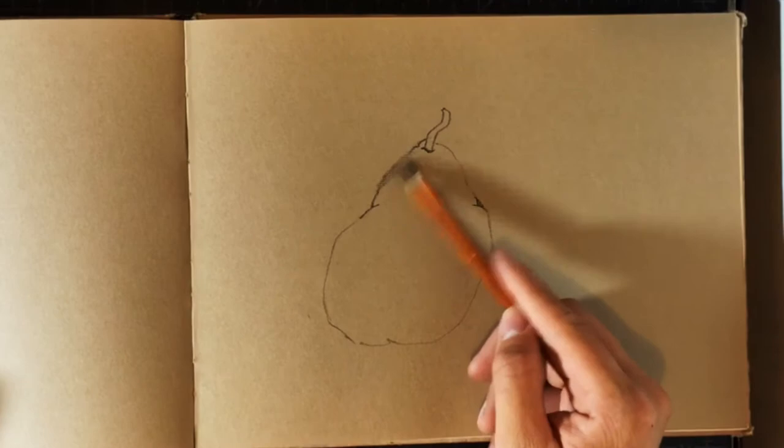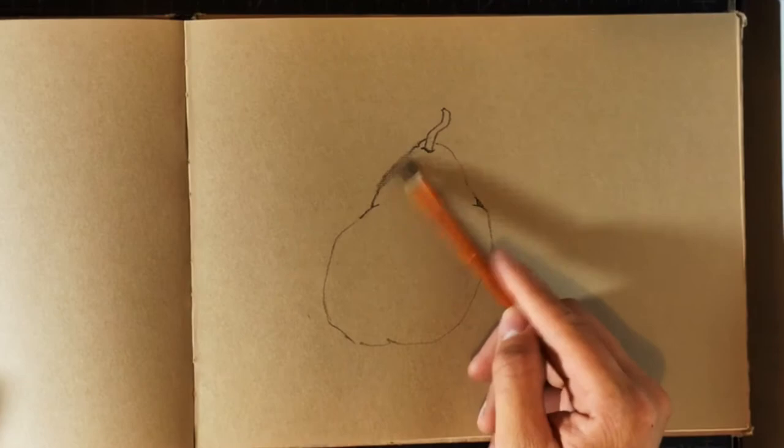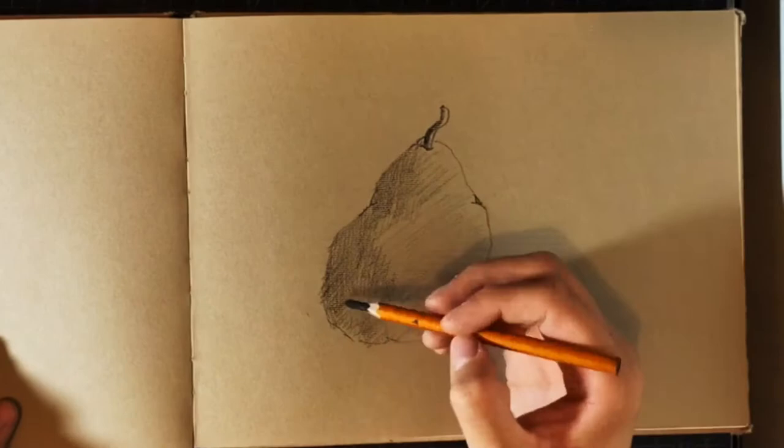I continue with a squiggly stem and then I decide to make the shadows on the left side and our light source will be directly on the right side. I begin doing this with a 2B pencil.